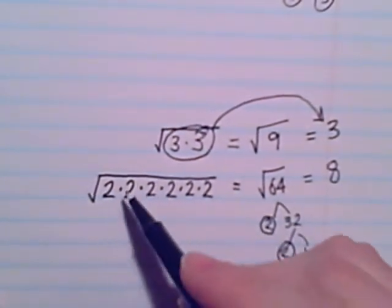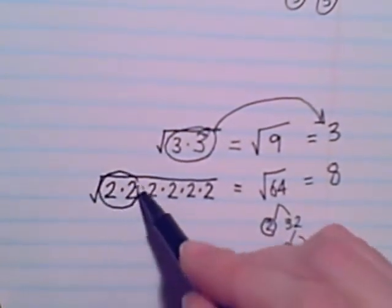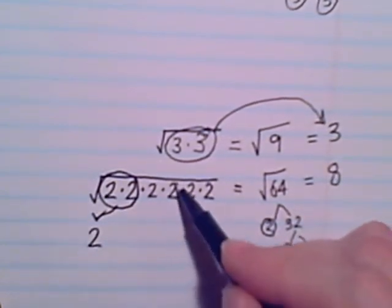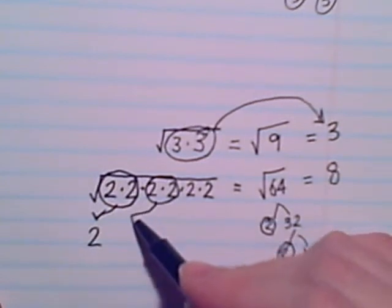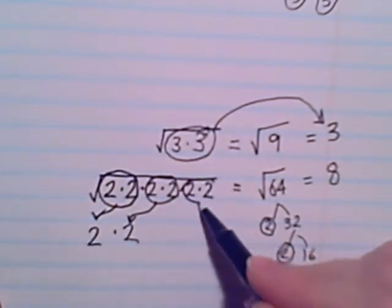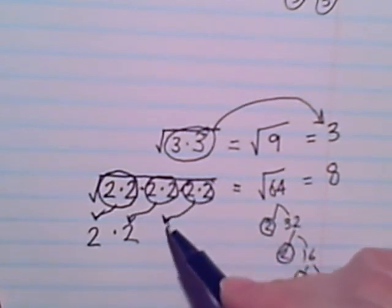If I look for pairs, I'll find there's a pair of twos. So I'll bring one 2 out of this radical. Another pair of twos. So I have a second 2 coming out. And a third pair. So I found three pairs of twos.